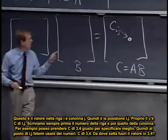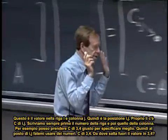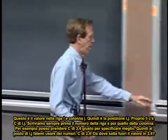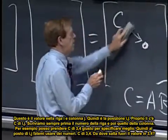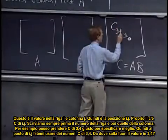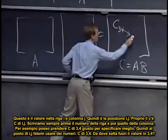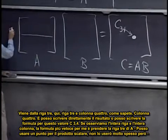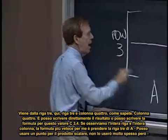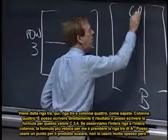We always write the row number and then the column number. So maybe I take C three, four, just to make it specific. So instead of IJ, let me use numbers, C three, four. So where does that come from, the three, four entry? It comes from row three here, row three and column four, as you know, column four.